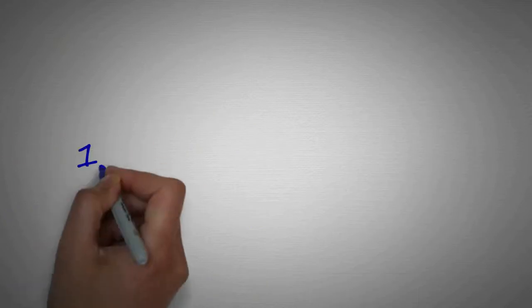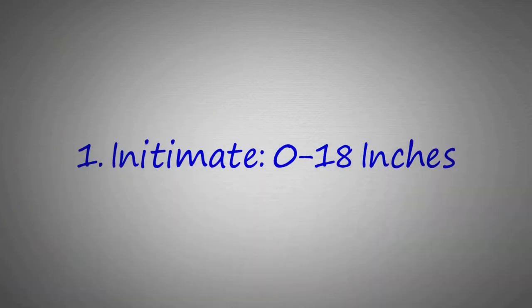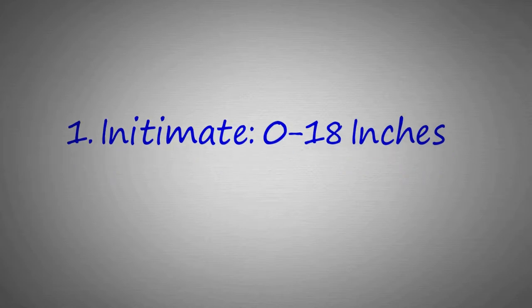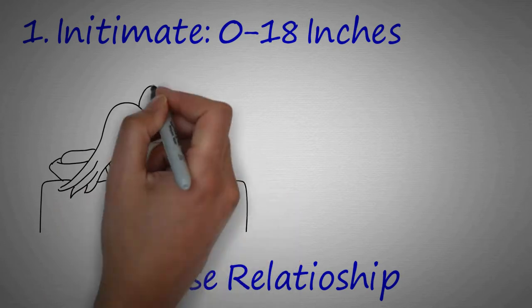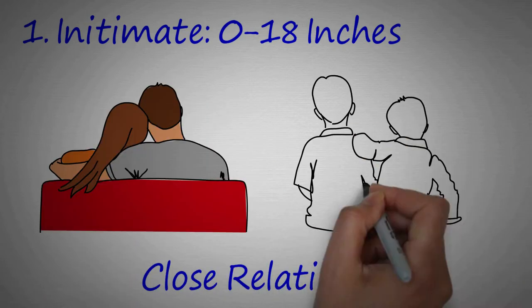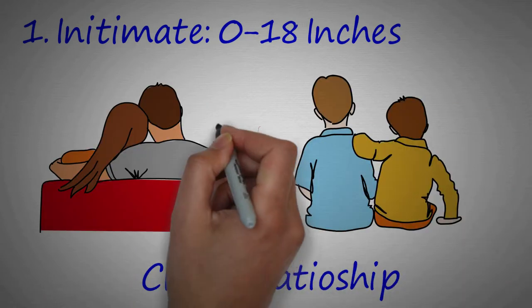The first one is intimate distance, which ranges from 0 to 18 inches. This distance is only for a very close relationship like couples or your best friends. You may feel loved or have a deep connection with them.